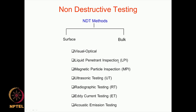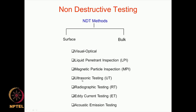For example, liquid penetrant inspection or LPI, magnetic particle testing, and eddy current testing — these are the methods which fall under surface NDT. On the other hand, techniques like ultrasonic testing, radiographic testing, and acoustic emission testing fall under the second category, which is bulk or volume NDT. And there are some techniques like ultrasonic testing which can do both — it can do surface NDT as well as bulk or volume NDT. These all are the techniques that will be covered in this particular course.